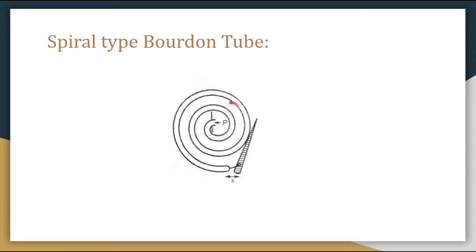In the spiral type Bourdon tube, the tubes are made by winding several turns with a flattened cross-section in the form of a spiral, as clearly shown in the diagram. When the pressure to be measured is applied to the spiral, it tends to uncoil, producing a relatively long movement of the tip. When pressure is applied and the spiral uncoils, the displacement of the tip will be much larger than in the C-type Bourdon tube.